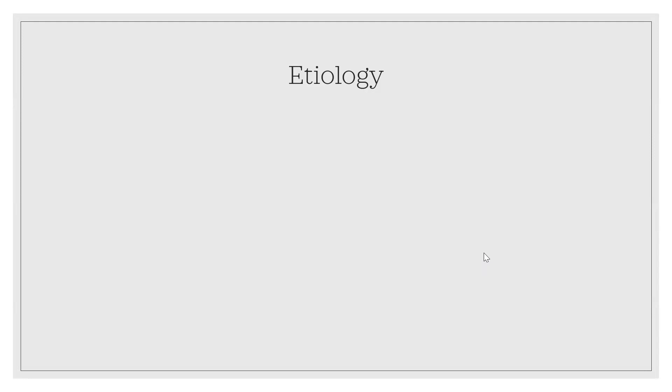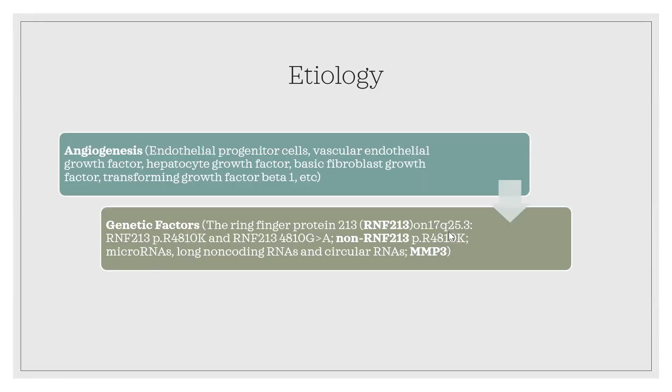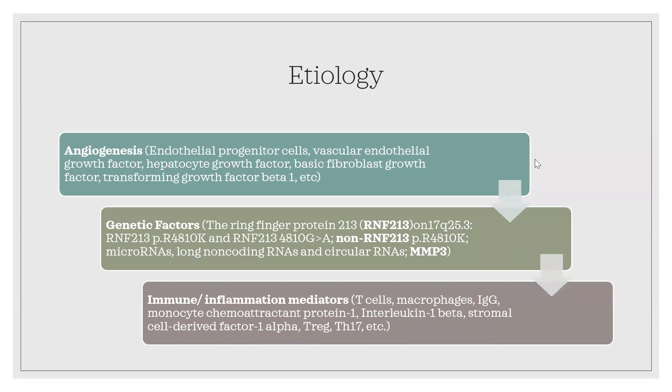To explain the etiology is quite complex. I decided to break it into three parts: angiogenesis, genetic factors, and immune and inflammation mediators. When we talk about angiogenesis, it involves an aberrant type. There is overexpression of endothelial progenitor cells (EPCs), vascular endothelial growth factors, and hepatocyte growth factor, which usually support vessel structure. These cells will have mutations and abnormal expression of the mitochondria, causing their overexpression and dysfunctional activity.